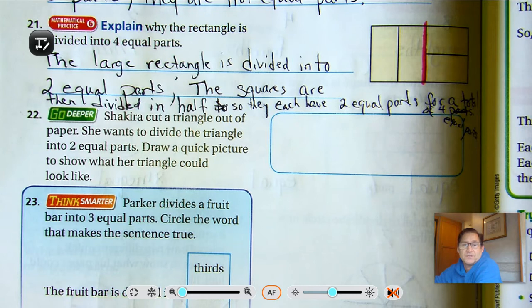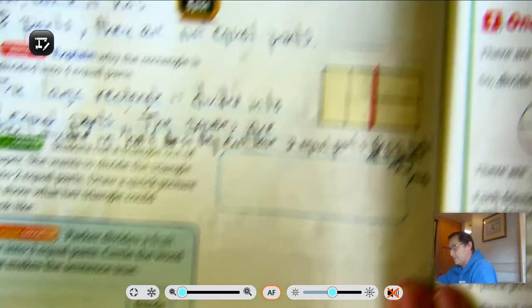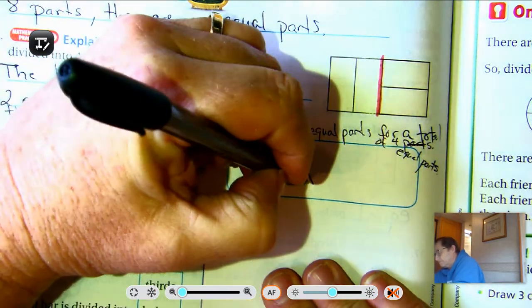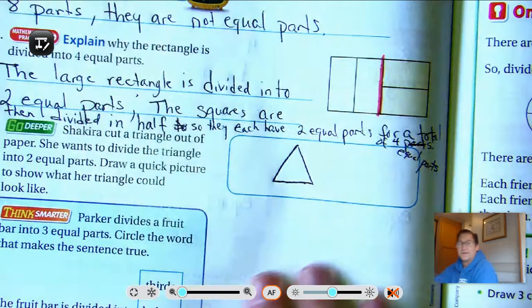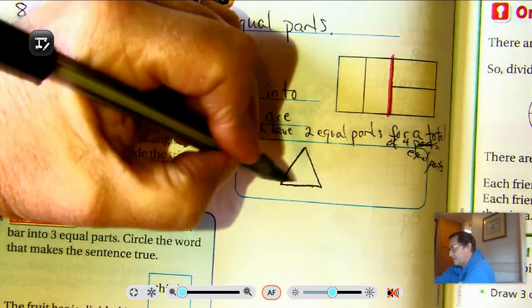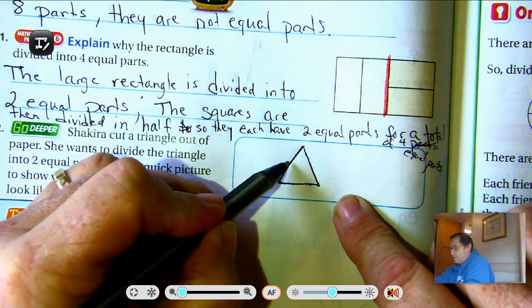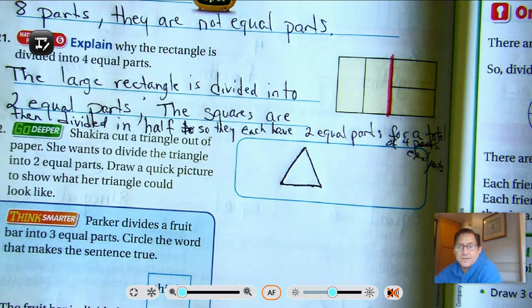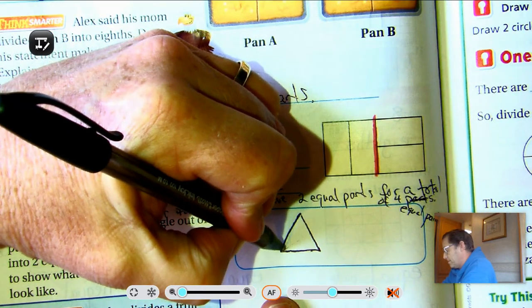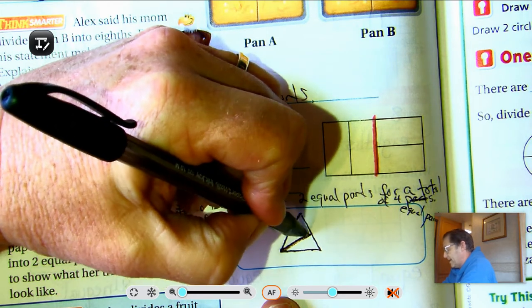Shakira cut a triangle out of paper. She wants to divide the triangle into two equal parts. Draw a quick picture to show what her triangle could look like. Well, we know a triangle has three sides. So if that's my triangle, I need two equal parts. I could take from this point and draw it straight down. I could take this point and draw it straight across. So there's three different ways we can make two equal parts. So just choose a corner. And draw a line straight from that corner to the opposite side's base.